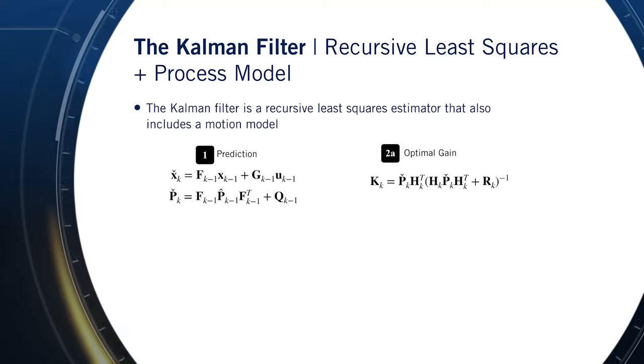Second, we'll use our measurement to correct that prediction based on our measurement residual, or innovation, and our optimal gain. Finally, we'll use the gain to also propagate the state covariance from our prediction to our corrected estimate.